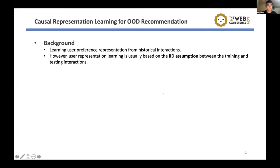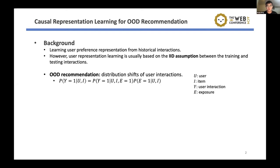As we all know, the core task of a recommendation system is to learn the user-preferred representation from historical interaction data. However, user preference learning is usually based on an IID assumption between the training and testing stages. It means that the distribution of user interaction sequences is the same from training to testing. We define out-of-distribution (OOD) recommendation as the case where the user interaction distribution shifts from training to testing. We can formulate it formally: the probability that a user interacts with an item will change between the two stages.